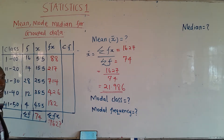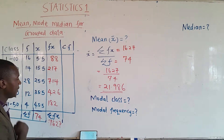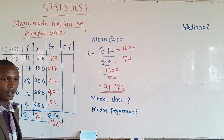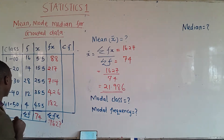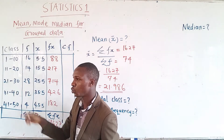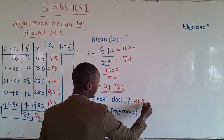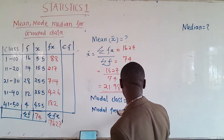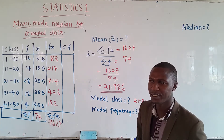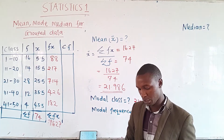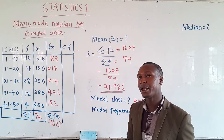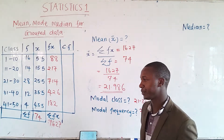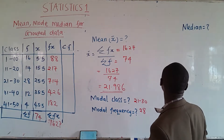We are also supposed to work out the modal class. The modal class is the class with the highest frequency — you can identify it by inspection. The class with the highest frequency is 21 to 30. The modal frequency is 28. Students are often confused: the modal class is the class that has the highest frequency, and the modal frequency is simply that highest frequency value.